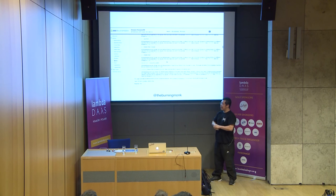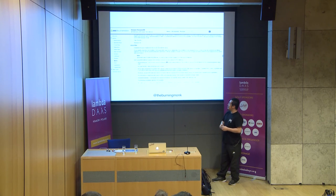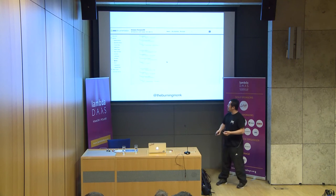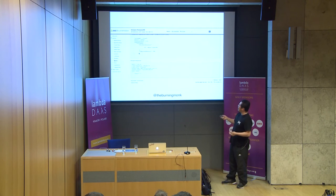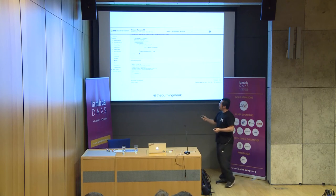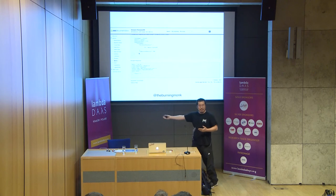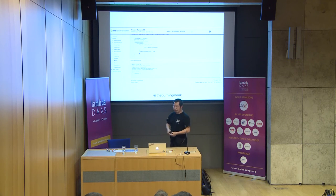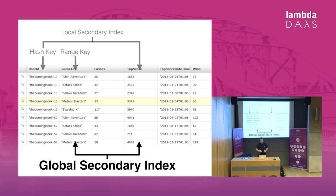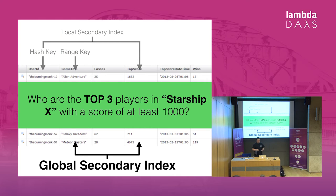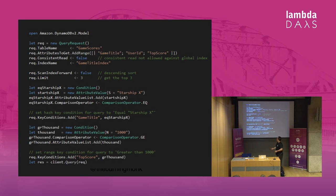However, when it comes to the query and scan APIs, it's actually really complicated because there are so many different options and tweaks. You can see that just by judging the size of the documentation — when you have something that requires so much text to explain what it does and how to use it, you know you're dealing with quite a lot of complexity. If I want to ask who are the top three players in Starship X with a score of at least 1,000, I end up writing quite a bit of code.